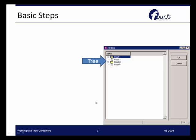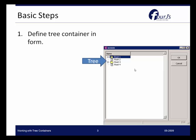The basic steps for creating a tree container and working with it are to first define the tree container in a form. The next thing is to define an array to hold the tree data. In your 4GL code you're going to have a definition of an array that's going to be mapped to this particular tree container.